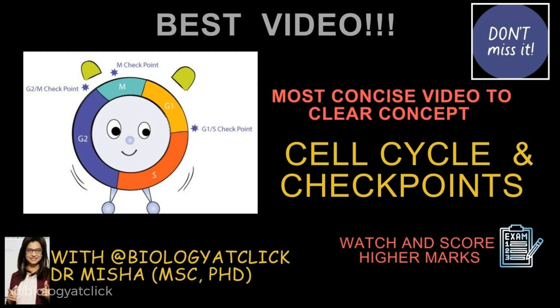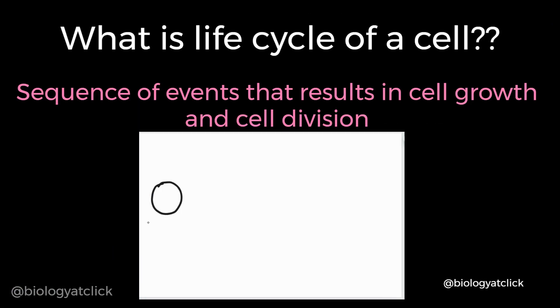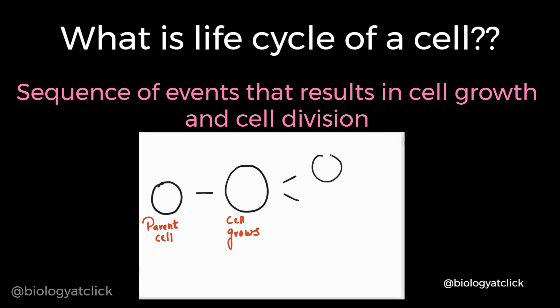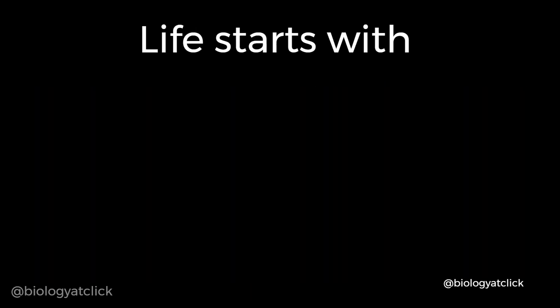Let's learn about cell cycle overview with Biology at Click. The cell cycle is the sequence of events occurring in an ordered manner, which results in cell growth and cell division. All organisms, even the largest, start their life from a single cell.